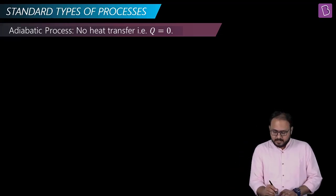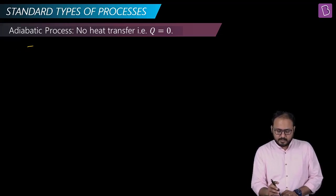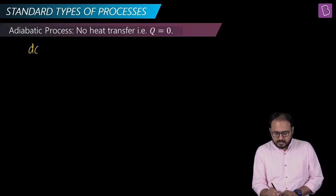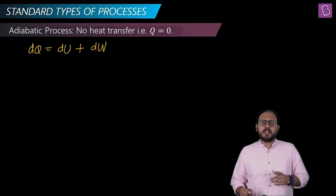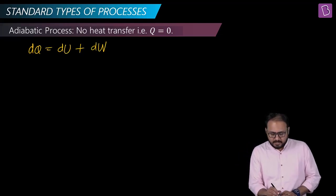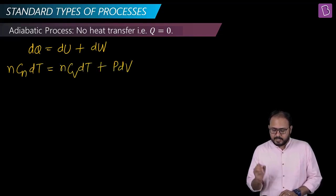First law says dQ is equal to dU plus dW. The modern form is: n·Cn·dT = n·Cv·dT + P·dV.